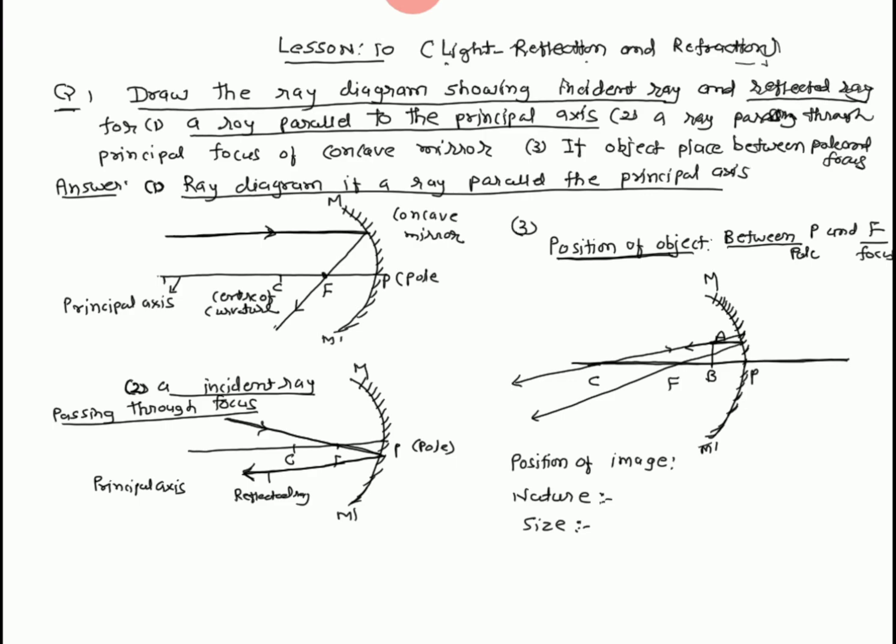I have three rays. Ray number 1: parallel to principal axis — after reflection, passing through the focus. Ray number 2: a ray passing through the focus — after reflection, parallel to principal axis. Ray number 3: a ray passing through the center of curvature — it returns in the same direction.